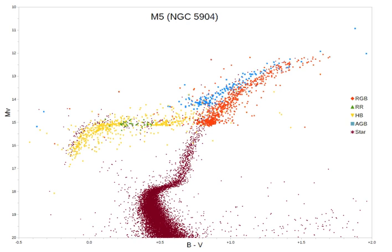The RGB bump is caused by a discontinuity in hydrogen abundance left behind by the deep convection. Shell energy production temporarily decreases at this discontinuity, effectively stalling the ascent of the RGB and causing an excess of stars at that point.